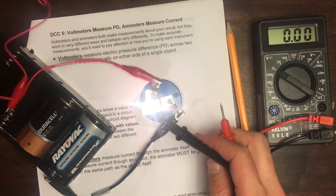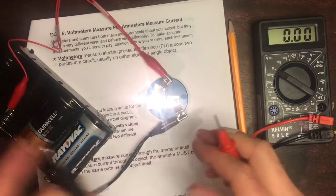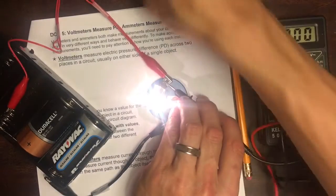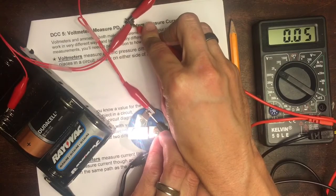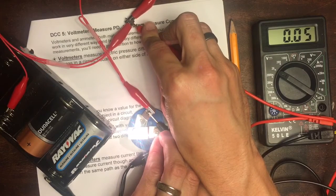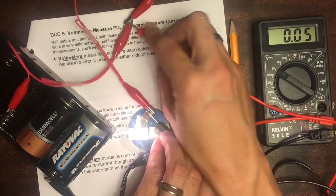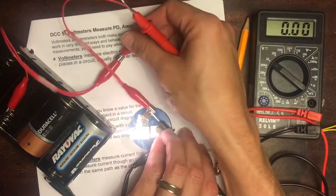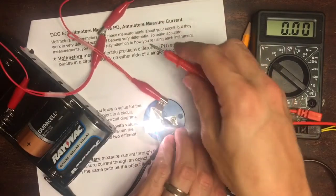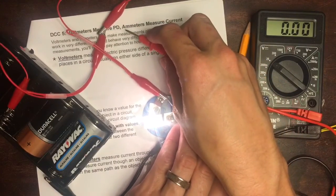I'm going to show you one last thing that I think is interesting. If we measure the pressure difference across this wire, we get 0.04 or 0.05. Sometimes you can get it down to 0.02, depending on how the wires are touching each other and that type of thing.